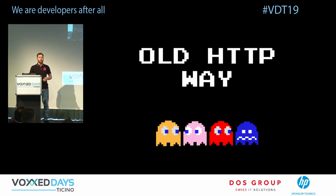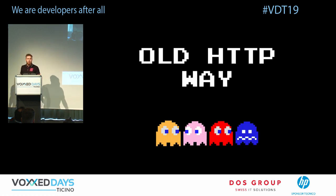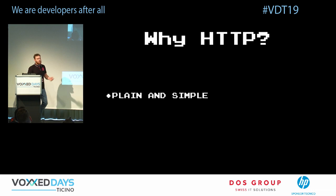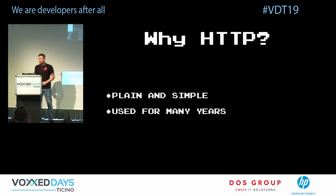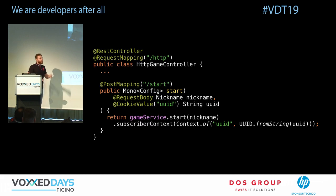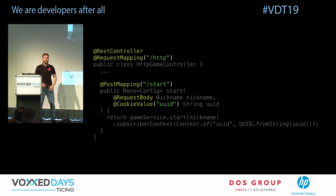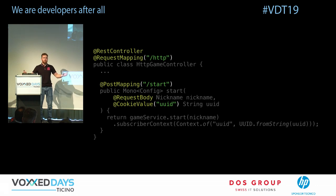I started with the simplest implementation — plain HTTP as the API for communication. Why HTTP? Because it's been around for 20 years and it works. In Spring Framework, all you have to do is implement a controller, add a couple of annotations, and the magic happens — nothing complex to build your API.